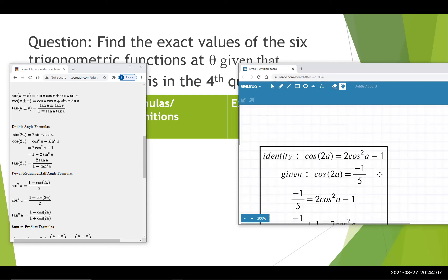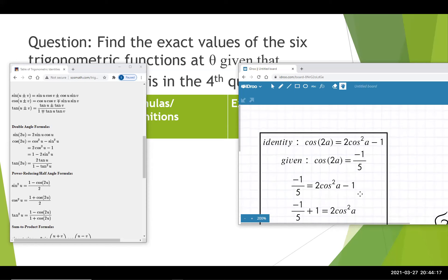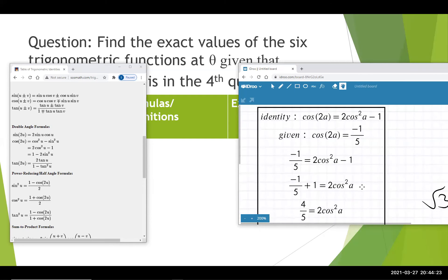So I'm going to combine these two statements to say that negative 1 fifth, since these are equal, is equal to 2 cosine squared of a minus 1. I'm going to add 1 to both sides, so the 1 on the right becomes 0 to give me 4 fifths is equal to 2 cosine squared of a.